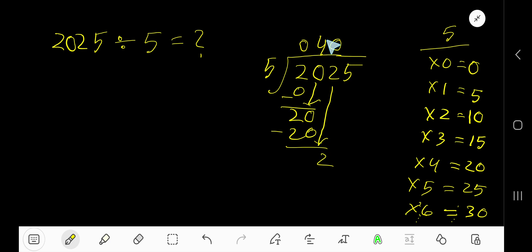0 times 5 is 0. Subtract from 2, bring down 5, making 25. 5 goes into 25 how many times? 5 times.